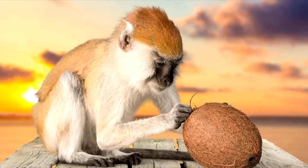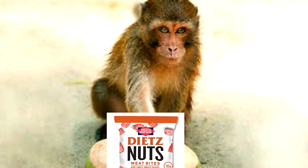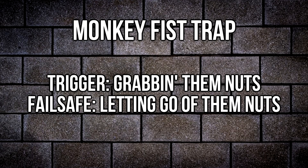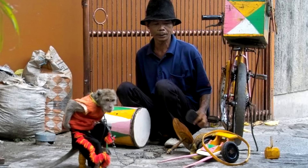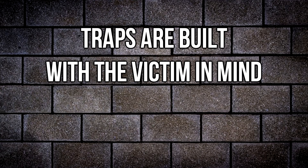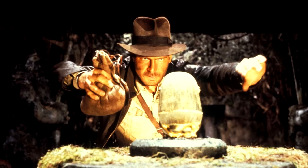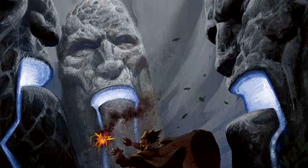A monkey will see a small hole filled with nuts, then he'll grab these nuts and won't let go of these nuts. The trigger is shoving their fist in the hole, the failsafe is just to let go of the damn nuts, and the result is a free monkey you can just pick up and take home. Sometimes, if a trap won't put the creator at risk, it won't have a failsafe and can't be disabled aside from triggering it. Unless that shit's magical, then just dispel it.